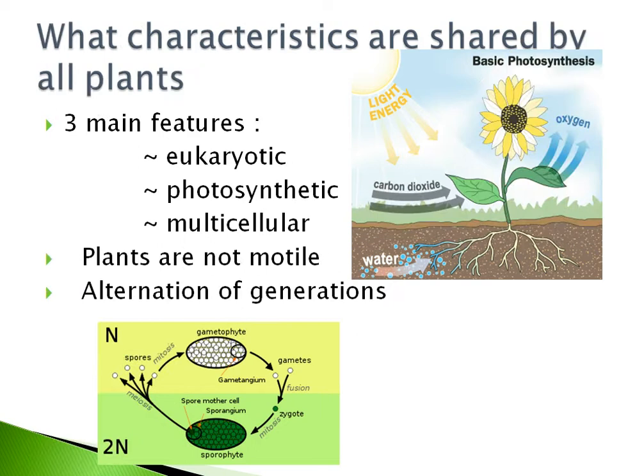Now back to the question: what characteristics are shared by all plants? Well, plants have three main distinguishable features. They all are eukaryotic, photosynthetic, and multicellular.